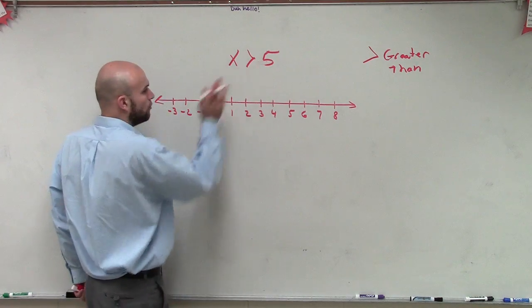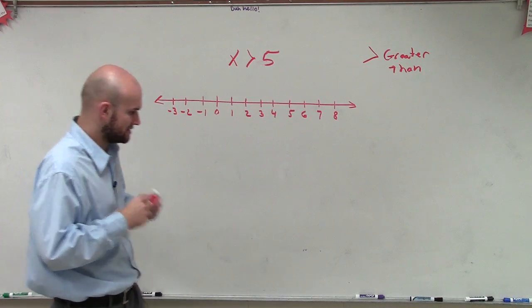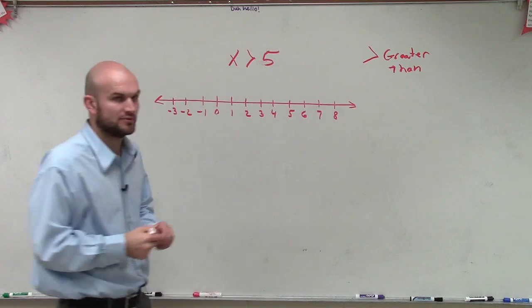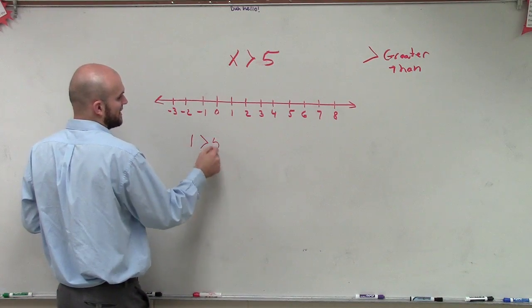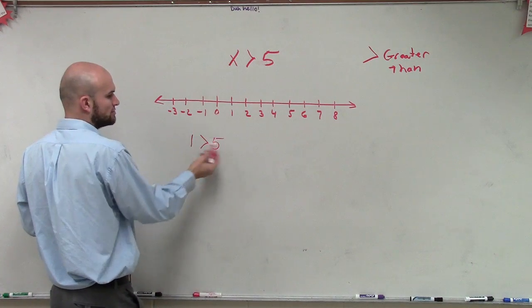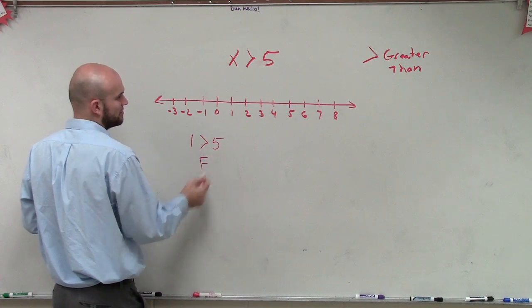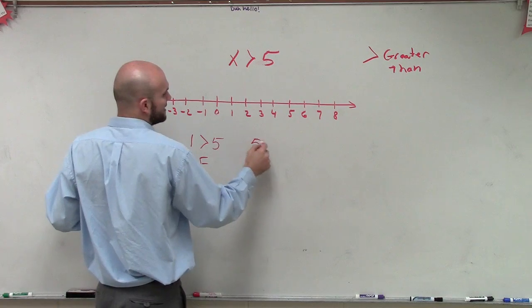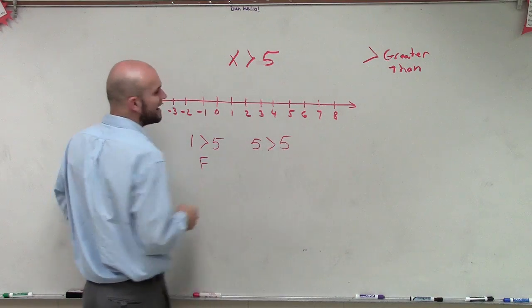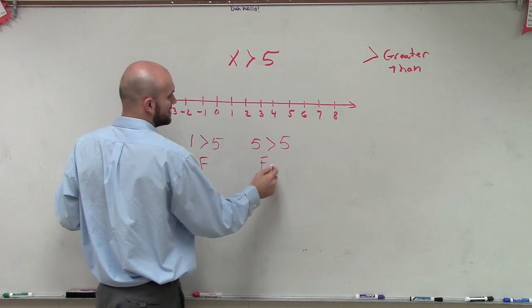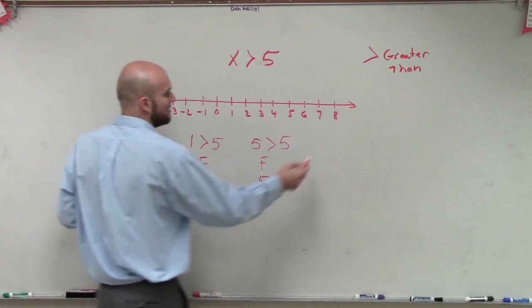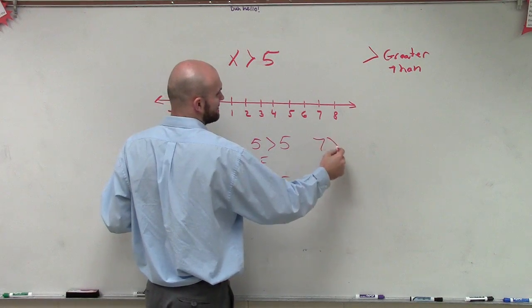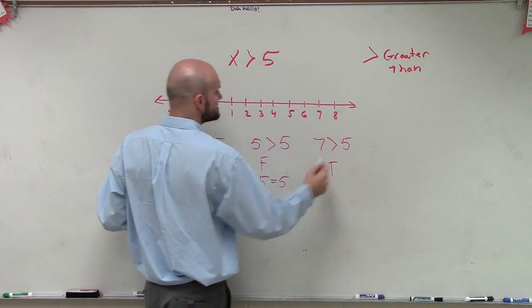So what I like to do is I always like to do a test point. We're going to pick three different test points. So the first thing is I can pick 1. Let's pretend x equals 1. Well, is 1 greater than 5? That's false. How about the number 5? Is 5 greater than 5? Well, that's false as well, because 5 is equal to 5. And then let's pick 7. Is 7 greater than 5? And that ends up being true.